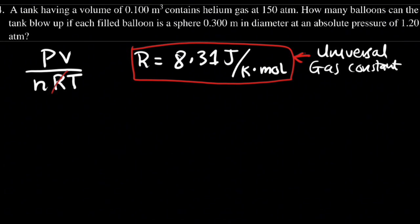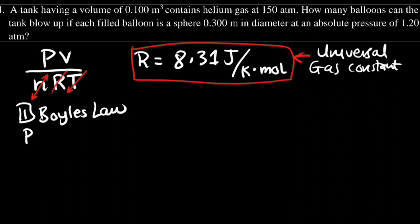Now because R is constant, and when you have the number of moles constant and also the temperature constant, then you will have the first law, which is Boyle's Law, where the pressure is inversely proportional to the volume. This means that the pressure multiplied by the volume is equal to a constant.